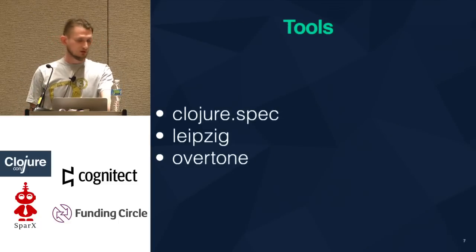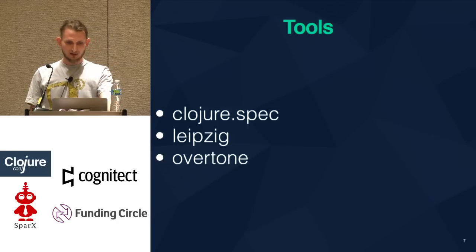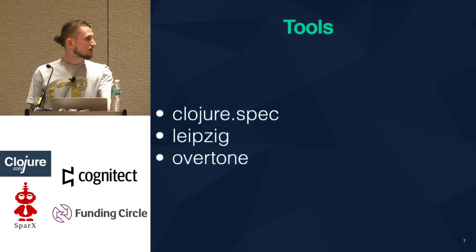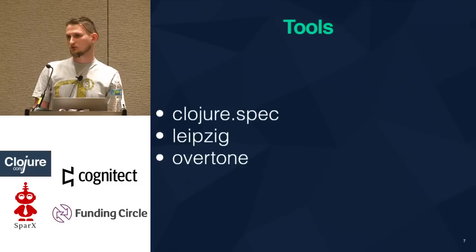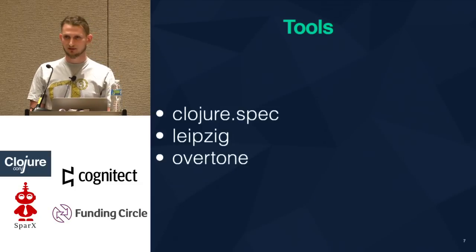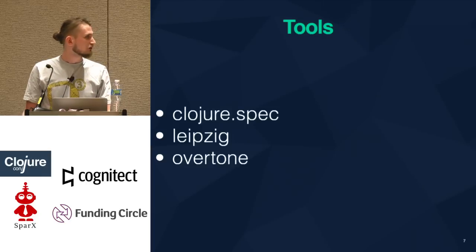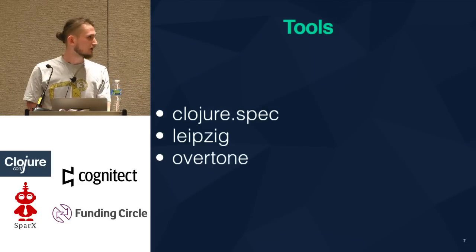I will be using, of course, Clojure spec. I'm also going to be using Chris Ford's library Leipzig — using the German pronunciation. You're probably familiar with this if you've seen any of Chris Ford's talks, and I know there's a lot of Chris Ford fanboys here. Finally, I'm going to be using Overtone for the actual audio and playback. I did manage to only get Overtone to work with Alpha 8 of Clojure 1.9.0, but this should be quite enough to demonstrate what's happening in spec right now.